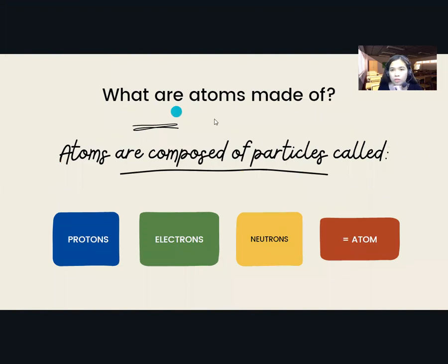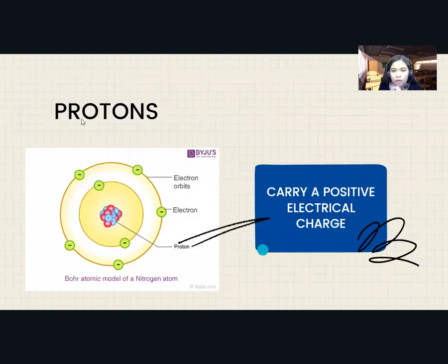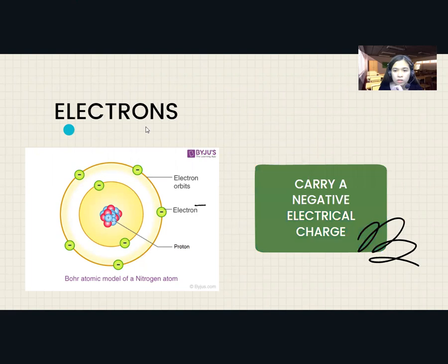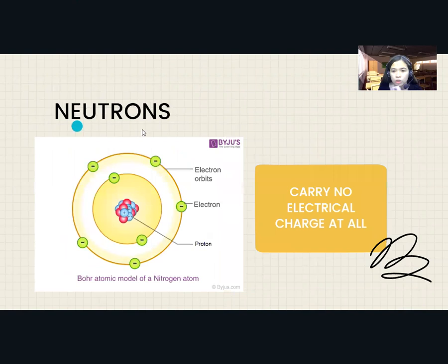What are atoms made of? Atoms are composed of particles called protons, electrons, and neutrons. Protons carry a positive electrical charge. Electrons carry a negative electrical charge. Neutrons carry no electrical charge at all.